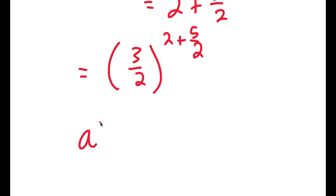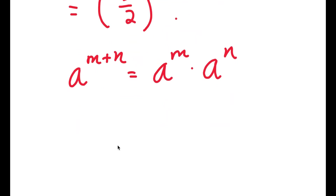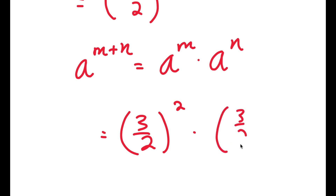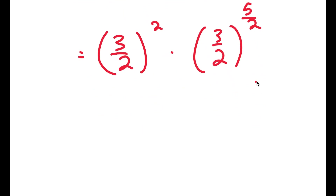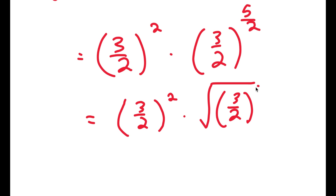If I have something in the form a to the power of m plus n, this is equal to a to the power of m times a to the power of n. So 3 over 2 to the power of 2 plus 5 over 2 is going to equal 3 over 2 to the power of 2 times 3 over 2 to the power of 5 over 2. And 5 over 2 is the same thing as the square root of 3 over 2 to the power of 5.